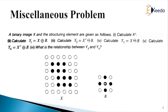In part one, we need to calculate X to the power C, the complement of binary image X. In part two, we calculate Y1, which is X dilated by structuring element B. In part three, we calculate Y2, the erosion of the complement of X by B. In part four, we calculate Y3, the erosion of X by B. In part five, we calculate Y4, the dilation of the complement of X by B. And in part six, we are asked what is the relationship between Y3 and Y4.